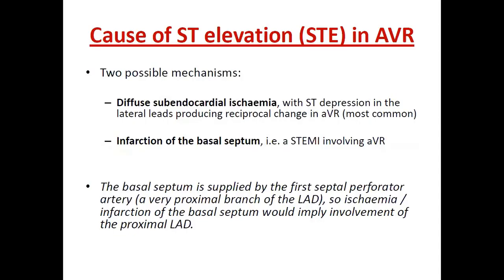The causes of ST elevation in AVR involve two possible mechanisms: diffuse subendocardial ischemia with ST depression in the lateral leads producing reciprocal changes in AVR, which is the most common; and infarction of the basal septum, that is anterior STEMI involving AVR. The basal septum is supplied by the first septal perforator artery, a very proximal branch of the LAD. Therefore, ischemia or infarction of the basal septum implies involvement of the proximal LAD. Thank you.